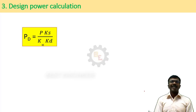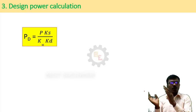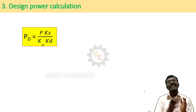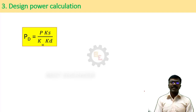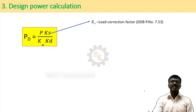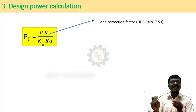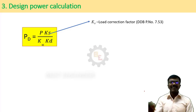Third step: we have to find the design power — how much power should be transmitted including losses. Without considering this design power, we can't transmit our expected power. There are a number of factors. The first is Ks, the load correction factor. Due to power fluctuation, the load may increase, so that factor must be included. It depends on the load transmission requirement and can be selected from PSG Design Data Book, page 7.53. Next is the arc of contact factor — how much angle the belt has in contact with the pulley. Normally we maintain an angle of contact of 180°; if this angle reduces, the power transmission is reduced, so that factor must be included.